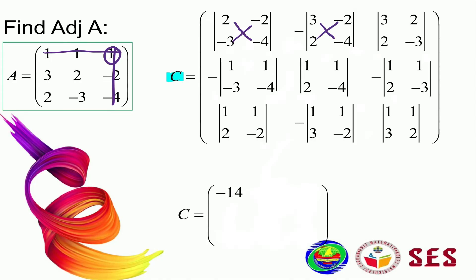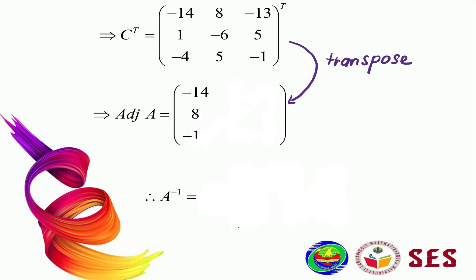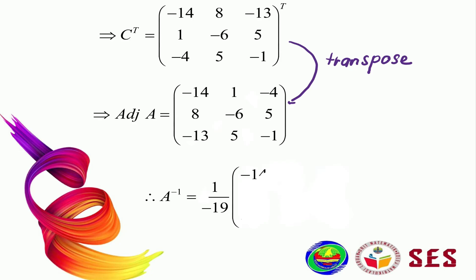The cofactor matrix of A is: negative 14, 8, negative 13 in the first row; 1, negative 6, 5 in the second row; and negative 4, 5, and negative 1 in the third row. In order to find the adjoint we need to transpose it, so rows become columns. The adjoint has columns: negative 14, 8, negative 13; then 1, negative 6, 5; and negative 4, 5, negative 1. Therefore A inverse equals 1 over the determinant, which is negative 19, multiplied by the adjoint of A.